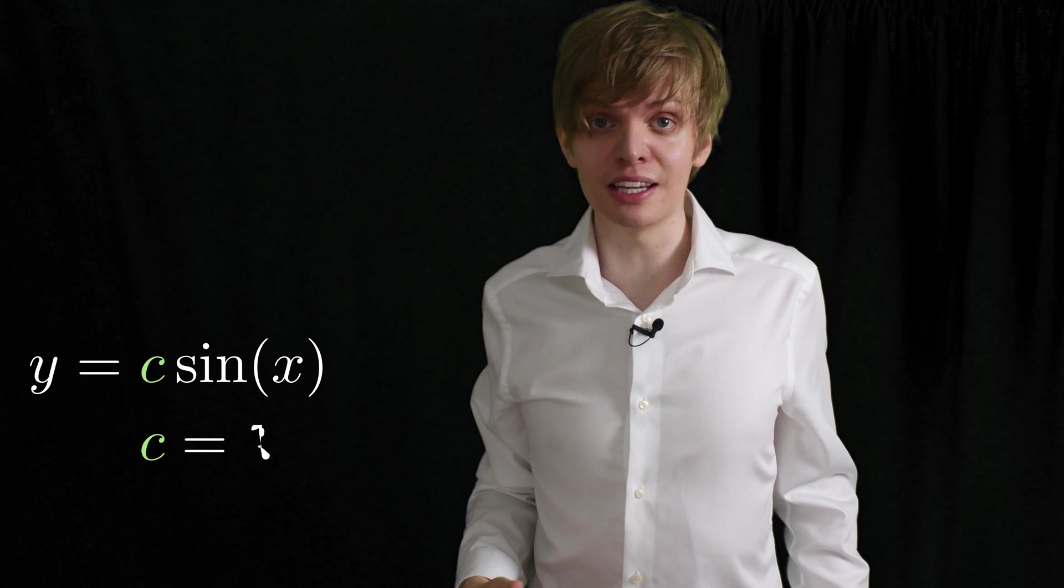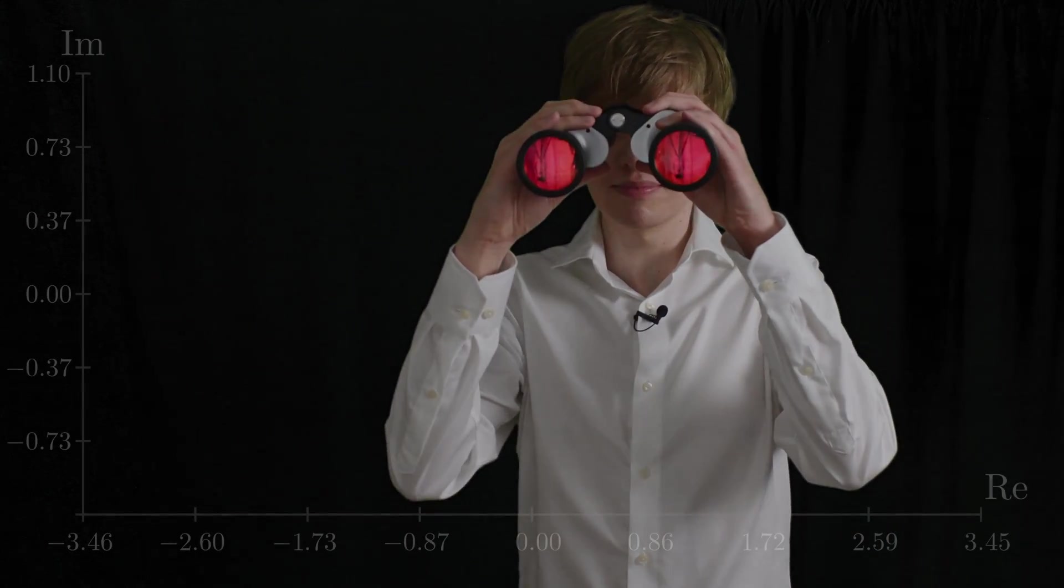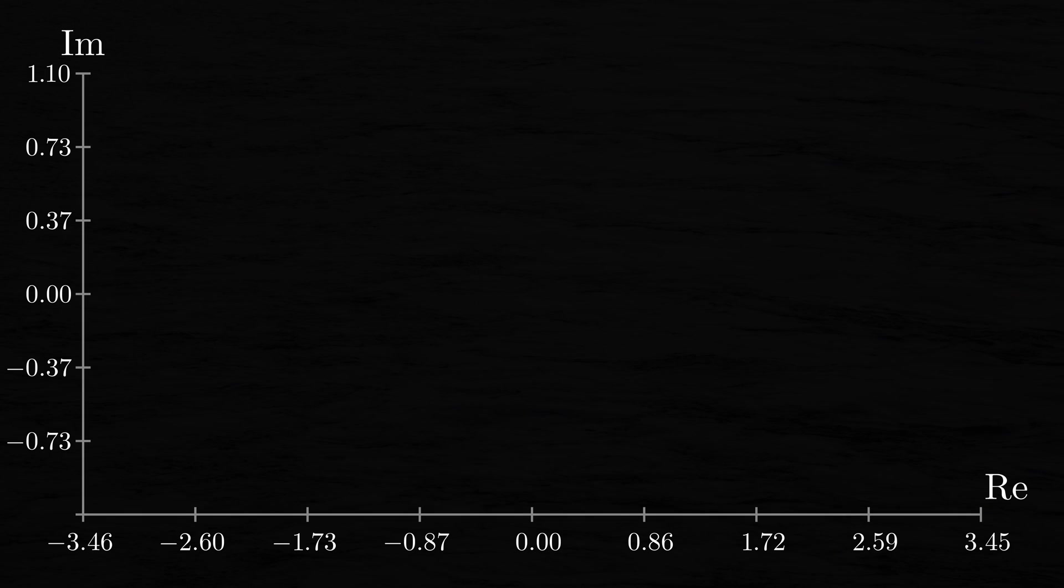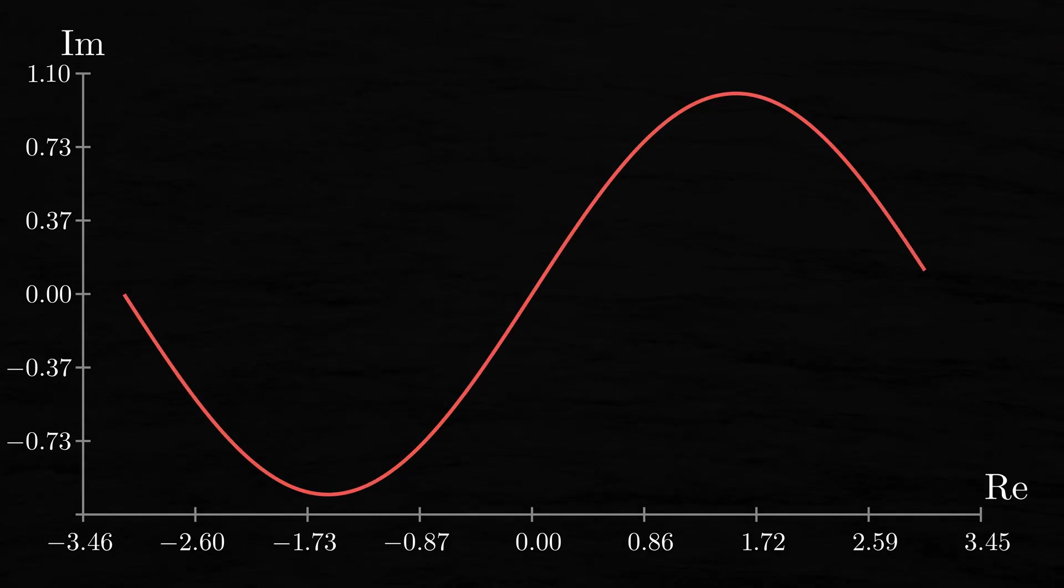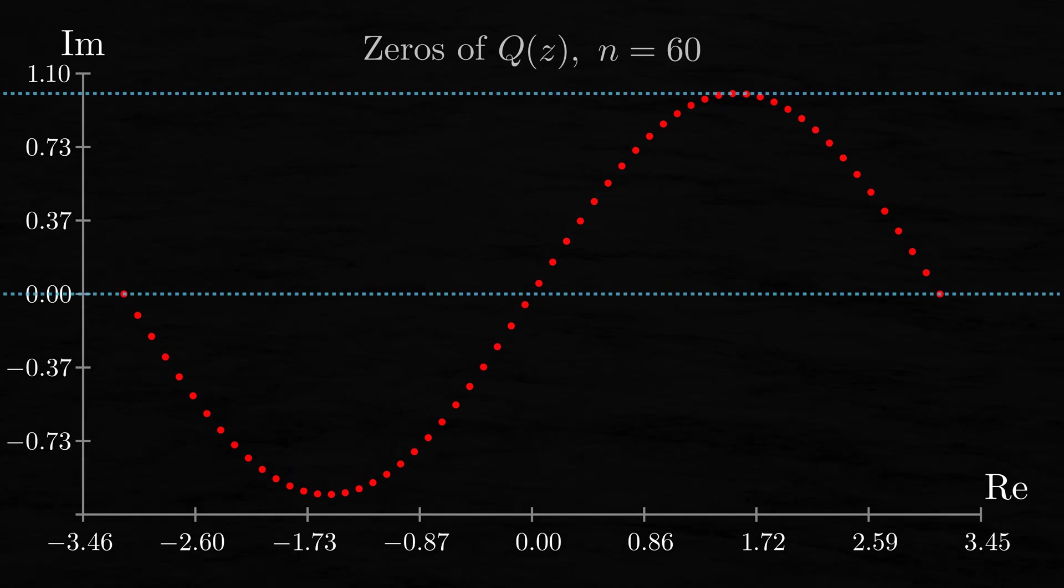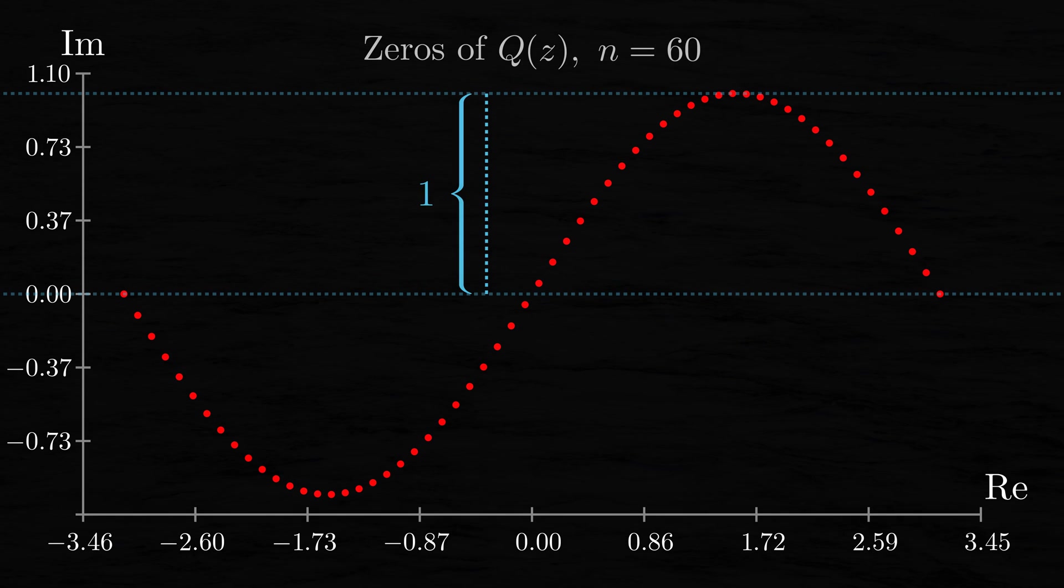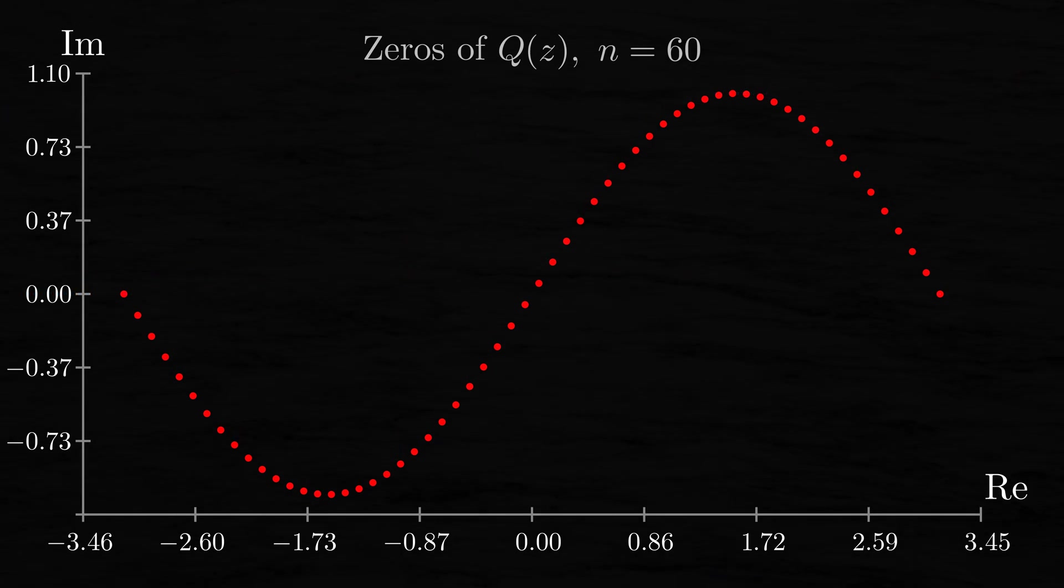So here's the projection of y equals the sine of x from negative pi to pi onto the complex plane, and here are 60 zeros of some polynomial q on this projection. Even though this looks very similar to what we saw a little while ago, note that the amplitude of the sine curve is just 1, compared to the previous sine curve, which had an amplitude of 6. Anyway, let's start taking the derivative again.